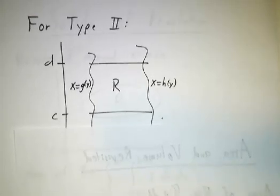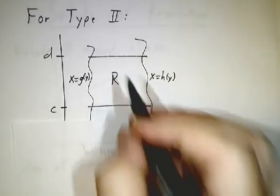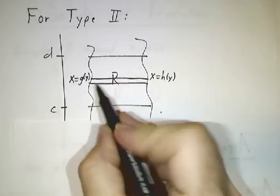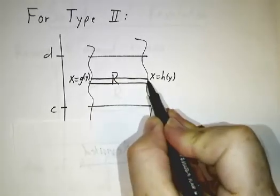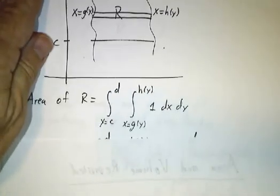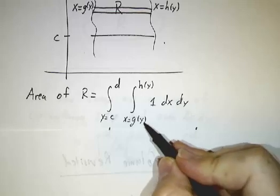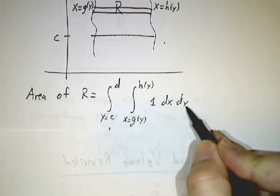Now, if you had a Type 2 region, it's the same thing in reverse. You want to figure out the contribution of each row, so you integrate from g(y) to h(y), and you get that the area of R is the integral from c to d of the integral from g(y) to h(y), 1 dx dy.